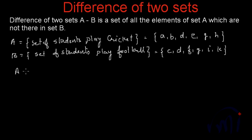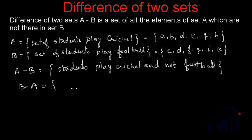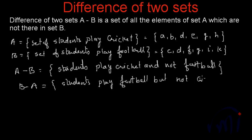A minus B will be the set of students who play cricket and not football, and B minus A will be the set of students who play football but not cricket.